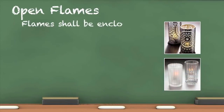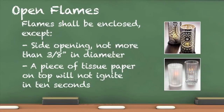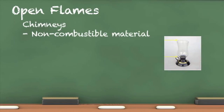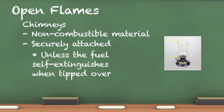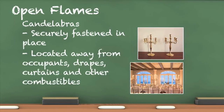Open flames must be enclosed; however, it is permissible to have openings on the side provided they are no more than three-eighths of an inch in diameter. The top distance to the flame shall be such that a piece of tissue paper placed on top will not ignite in 10 seconds. Chimneys — the decorative open flame cover — are required to be constructed of non-combustible material and securely attached to the open flame device. The chimney is not required to be attached if the fuel self-extinguishes when tipped over. Candelabras with flame-lighted candles shall be securely fastened in place to prevent overturning and located away from nearby occupants, drapes, curtains, and other combustibles.